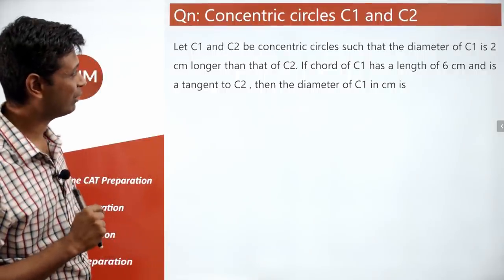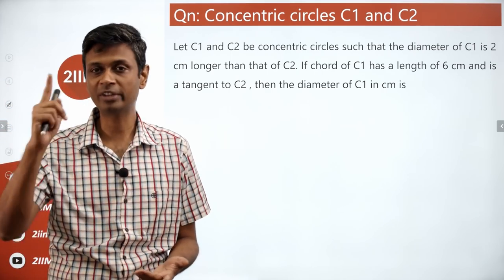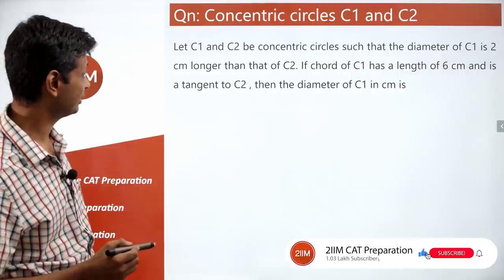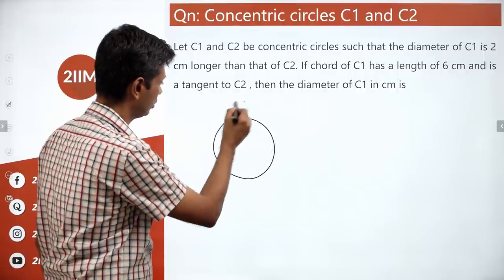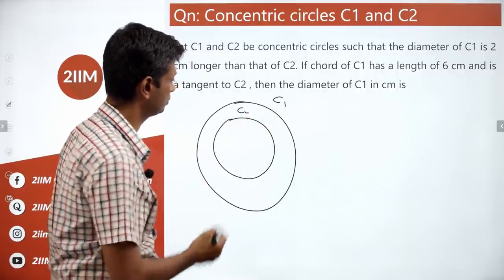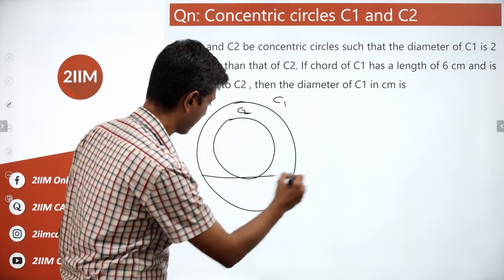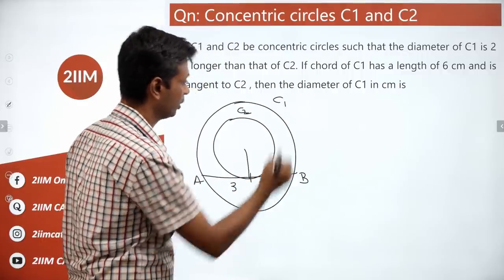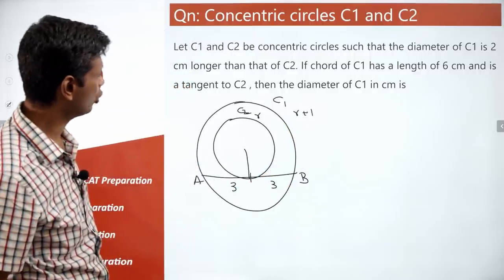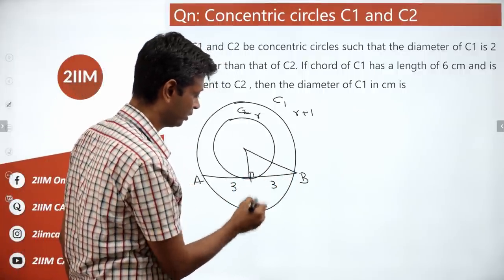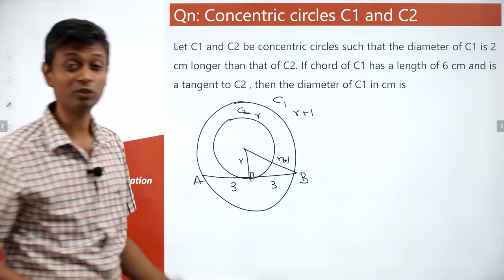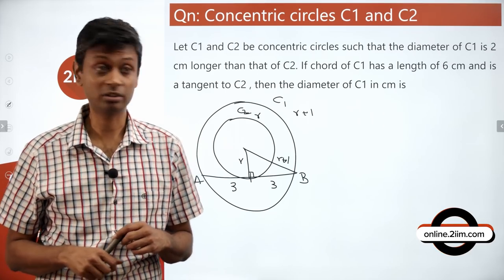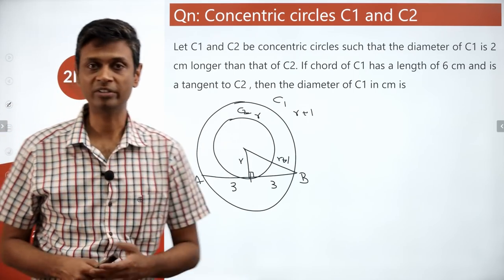Concentric circles C1 and C2 with C1's radius 1 cm more than C2's radius R. A chord of C1 (length 6 cm) is tangent to C2. The chord's midpoint creates a right triangle with sides 3 (half chord), R (inner radius), and R+1 (outer radius). Recognizing the 3-4-5 triplet: R=4, R+1=5. Diameter of C1 = 2×5 = 10 cm.